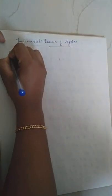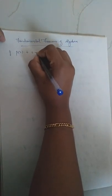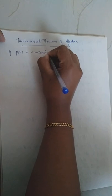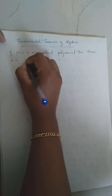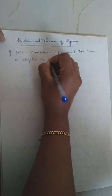Hello students, welcome to the class on the Fundamental Theorem of Algebra. So what is the statement of the Fundamental Theorem of Algebra? If P(z) is a non-constant polynomial, then there is a complex number A such that P(A) = 0. That is the statement of the Fundamental Theorem of Algebra.